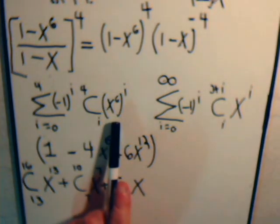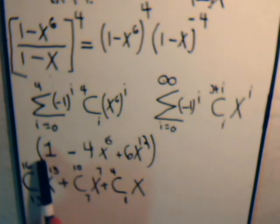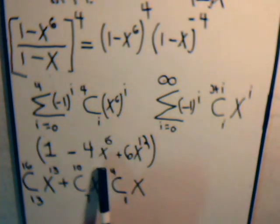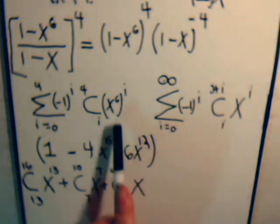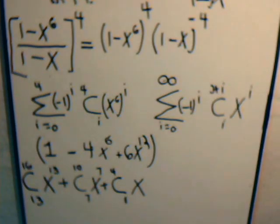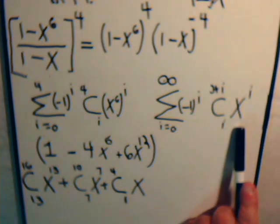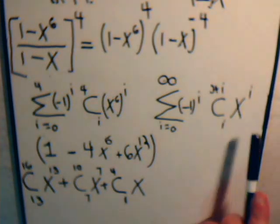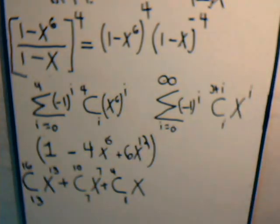So for here when we started expanding this out we said well this is equal to 1 minus 4 times x to the 6th plus x to the 12th. Then the next term would have x to the 18th. Well that's beyond x to the 13th so we don't even care about that. So from this one here the only terms we're interested in is these. Then we're multiplying it by this infinite series. But we're only interested now in situations where an x from here times an x from there where their exponents add up to 13.